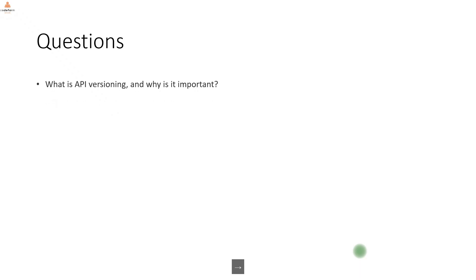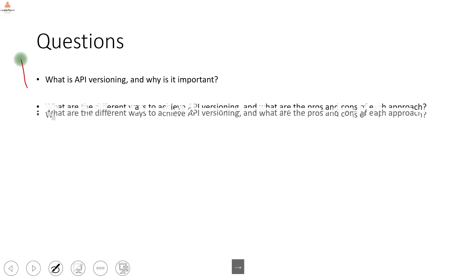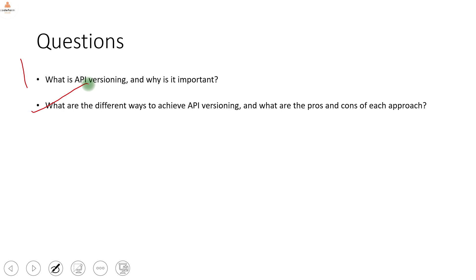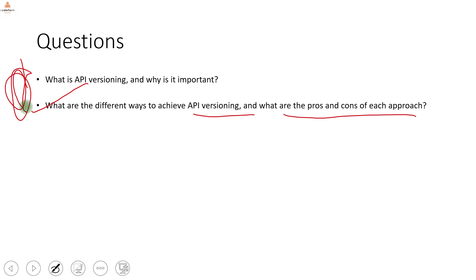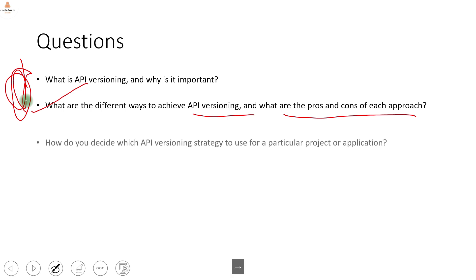The first question is straightforward: what is API versioning and why is it important? What are the different ways to achieve API versioning and what are the pros and cons of each approach? We have seen this in detail. These two questions are very basic and theoretical — you just have to explain them.